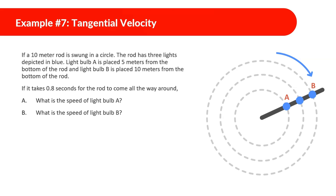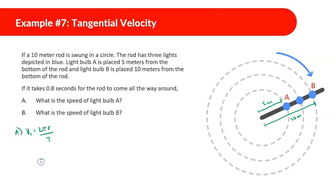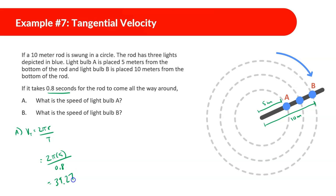First mathematical example: a 10-meter rod is swung in a circle. Light bulb A is placed 5 meters from the bottom of the rod and light bulb B is 10 meters from the bottom. What is the speed of each? Using velocity tangential = 2πr/T, for light bulb A: r = 5 meters, period = 0.8 seconds. So: 2π × 5 ÷ 0.8 = 39.27 meters per second.